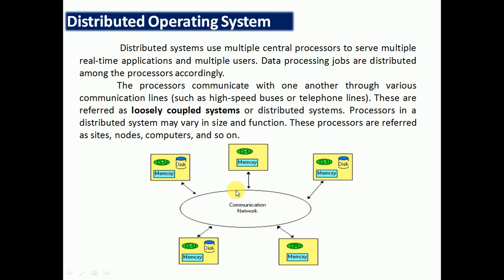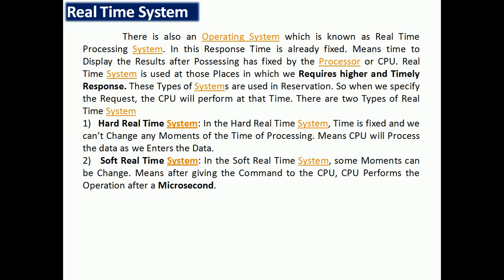In distributed operating systems, multiple central processors serve multiple real-time applications and multiple users. Data processing jobs are distributed among the processors, which communicate with one another through various communication lines such as high-speed buses or telephone lines. These are referred to as loosely coupled systems or distributed systems, and processors may vary in size and function.